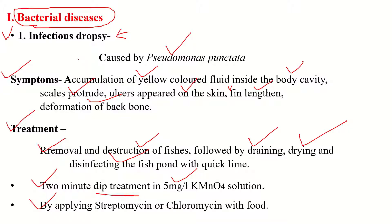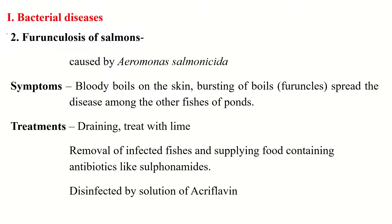The second bacterial disease is Furunculosis of Salmonids. This is one of the most important bacterial diseases of wild and farmed salmonids, especially in species which live in dirty water containing a large amount of decaying matter. This disease is caused by Aeromonas salmonicida, which is a rod-shaped bacteria about two to three microns in length.